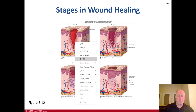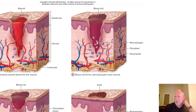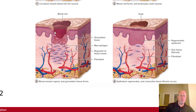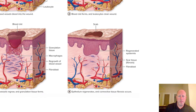Looking at the wound healing diagram: starting with the wound in the epidermal layer down into the dermis, leukocytes play a role in cleaning up. In the second phase, a blood clot forms, leukocytes clean the wound, along with macrophages, fibroblasts, neutrophils, and dendritic cells — all part of the immune system. In stage 3, blood vessels regrow and granulation tissue forms, with macrophages still present along with fibroblasts. Finally, a scab forms with regenerated epidermis and scar tissue; fibroblasts decrease significantly, macrophages are no longer present, epithelium is regenerating, and connective tissue fibrosis occurs.